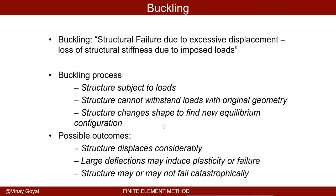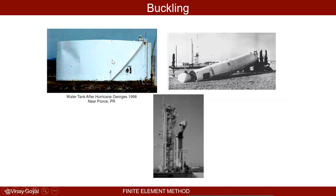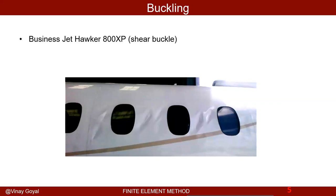Here is a buckling event near my hometown in Puerto Rico after Hurricane George in 1998. What potentially caused that buckle is wind pressing against the cylinder, like a lateral pressure environment. Here are two launch vehicles that buckled — common failure modes. Here you can see a business jet Hawker with a shear buckle. You can get shear buckling in aircraft by the way the aircraft is loaded: you have pressure loads, tension loads, bending loads, and shear loads, and the combination of those loads can cause shear buckles.